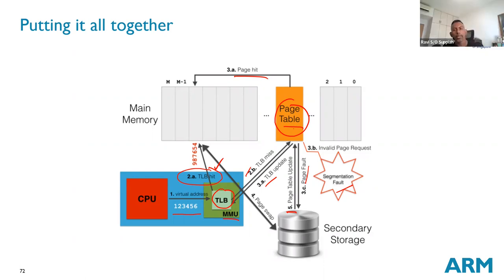Why do we need to split memory into pages? The idea comes back to the concept of locality — even though you may write a lot of code, the locality principle means similar lines of code and similar data elements are accessed together in time windows.